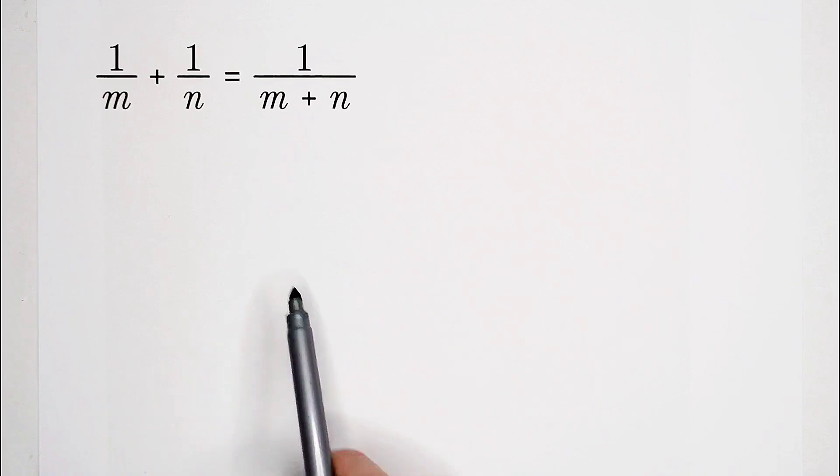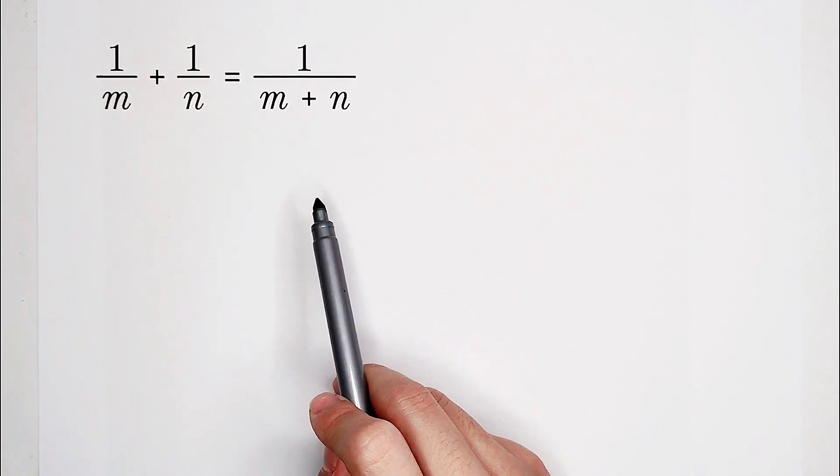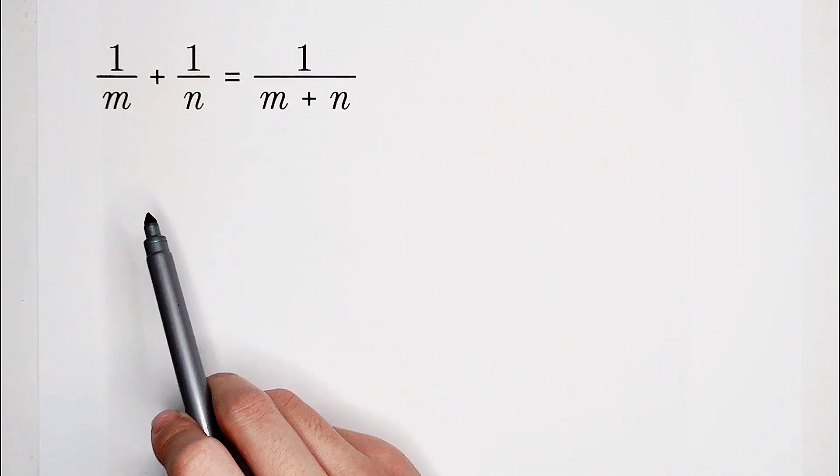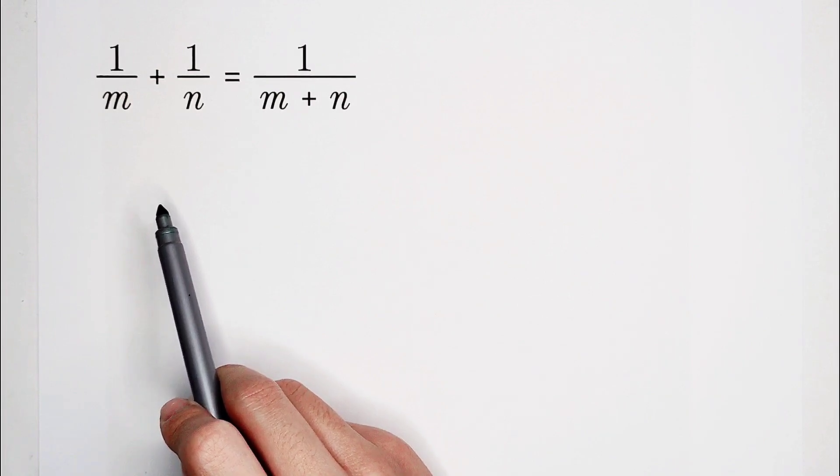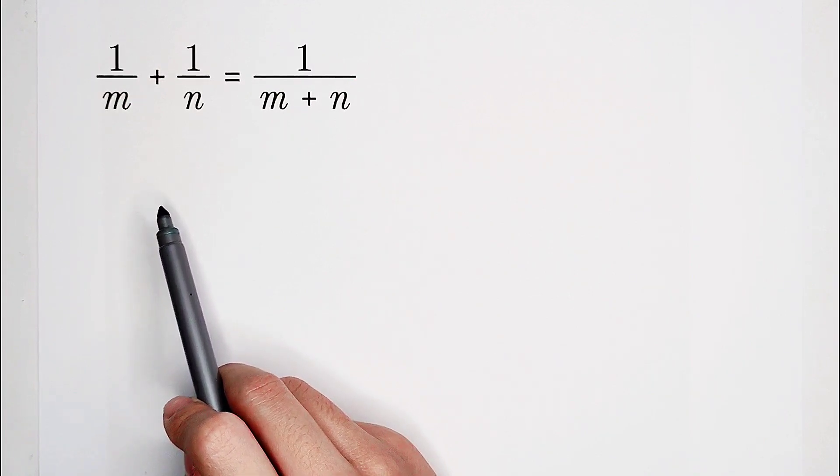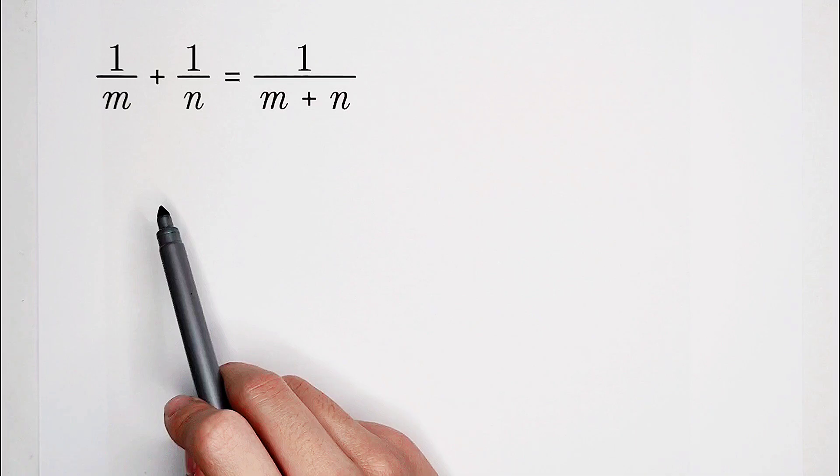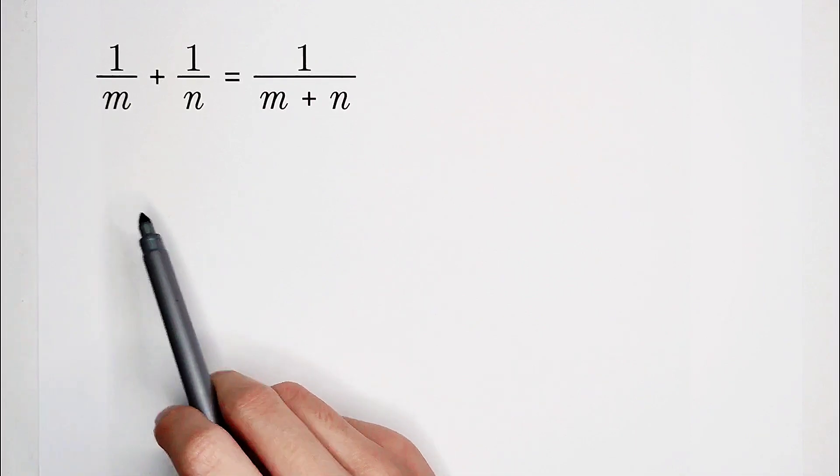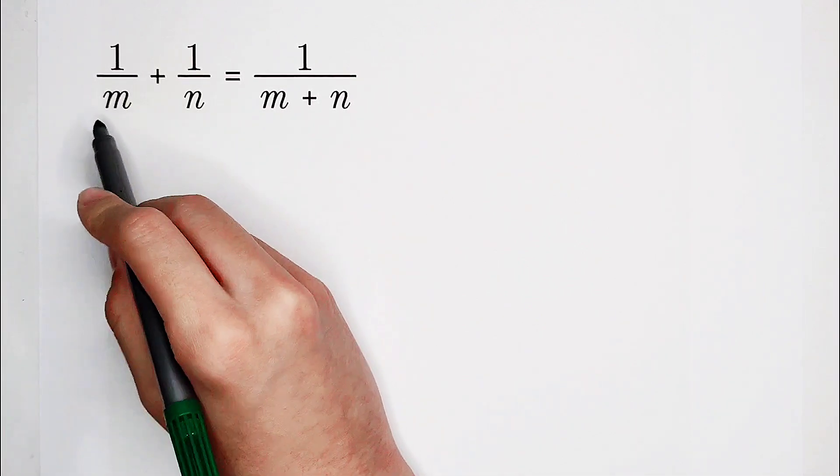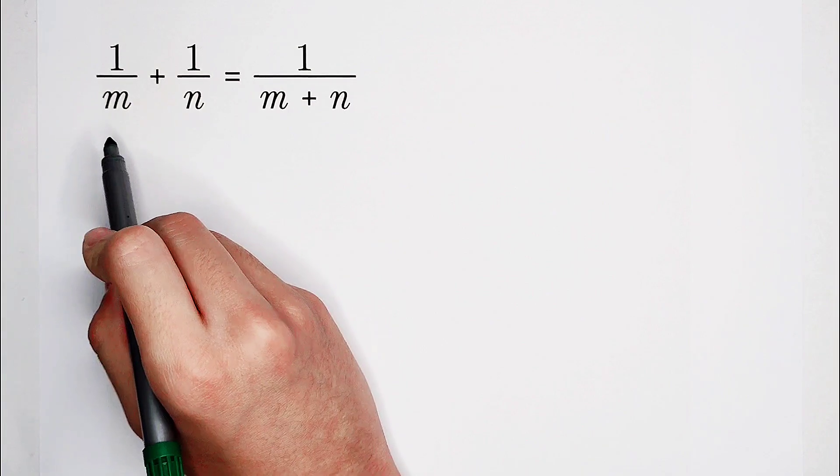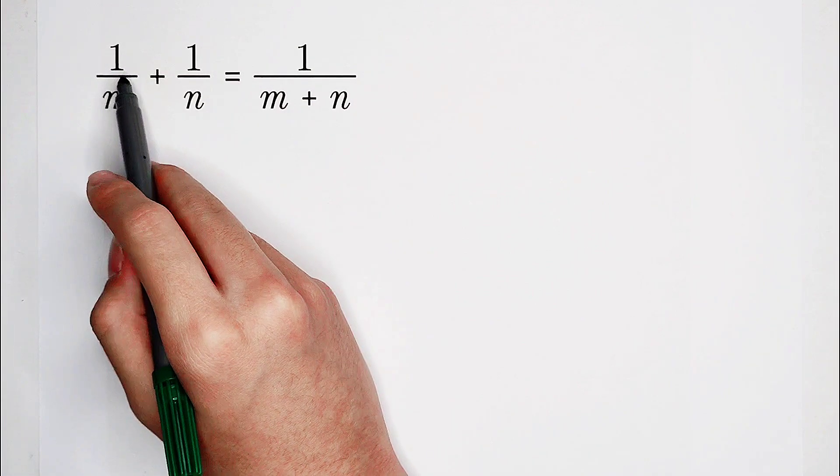Of course, the right-hand side is one fraction, but the left-hand side has two. Of course, we don't like fractions, especially many. So what should we do? For the left-hand side, for 1 over m, we can multiply the denominator and the numerator by n.